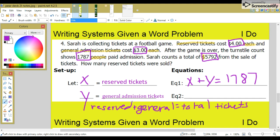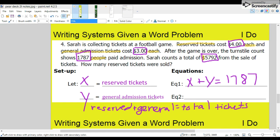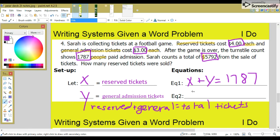Equation two, we're going to talk about this other number, the total money in sales. And that would be however much the reserve tickets cost, which is four dollars. So, four times X plus three times Y equals $5,792.